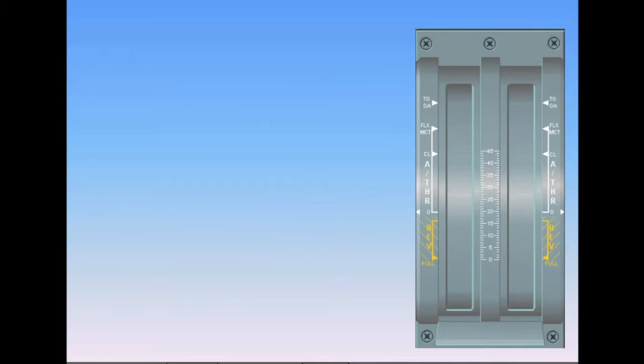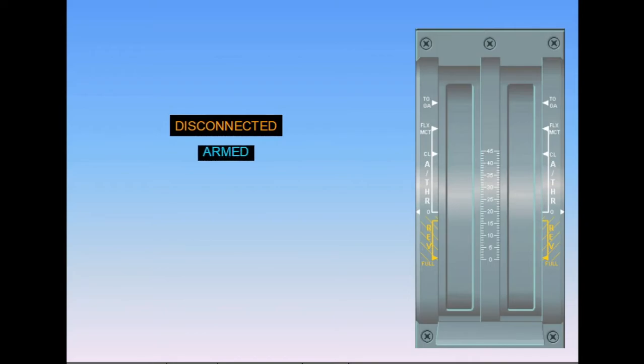The Autothrottle has three states. It can be either disconnected (or off), armed — ready to be engaged by a specific pilot action on the thrust levers — or engaged (or on).